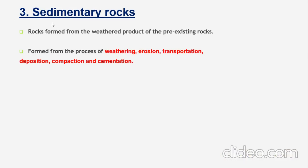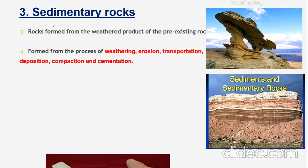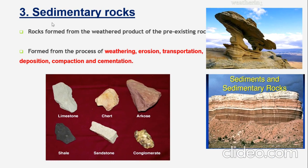Sedimentary rocks are formed from the weathered products of pre-existing rocks. A number of processes are involved: weathering and erosion of earlier-formed rocks, transportation of the weathered sediments, deposition of these sediments in a basin, and finally compaction and cementation, which result in the formation of sedimentary rocks. In further sessions, we will cover each of these topics in detail. Different types of sedimentary rocks include limestone, chert, arkose, shale, sandstone, and conglomerate.